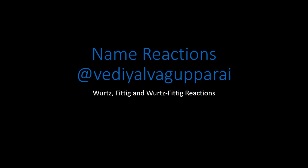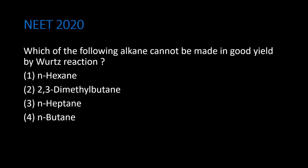Welcome to Vedial Vagaparai. In today's video we are going to see name reactions: Wurtz reaction, Fittig reaction, and Wurtz-Fittig reaction. Let's discuss this NEET 2020 question: Which of the following alkanes cannot be made in good yield by Wurtz reaction? N-hexane, 2,3-dimethylbutane, N-heptane, and N-butane.